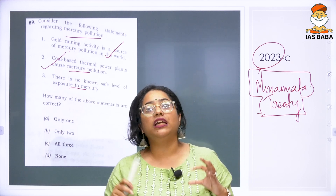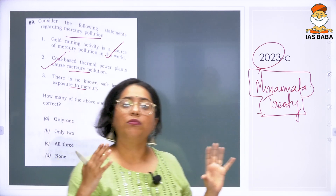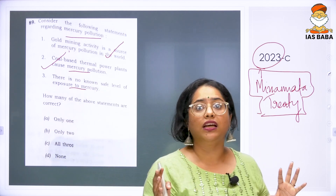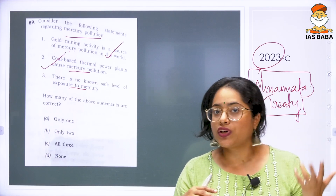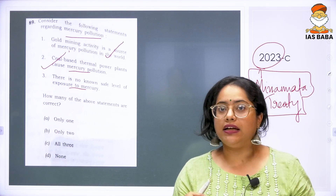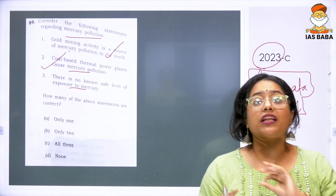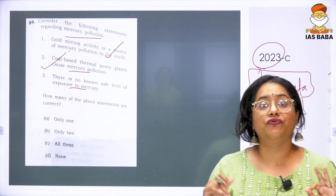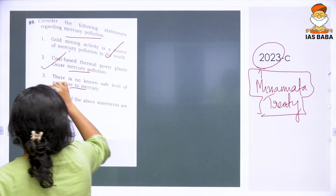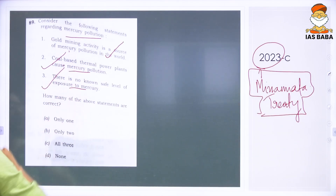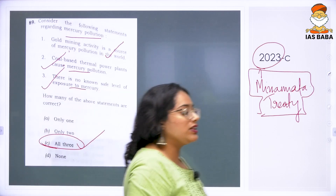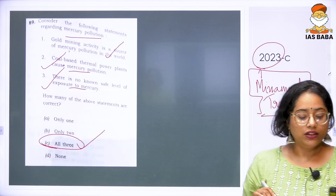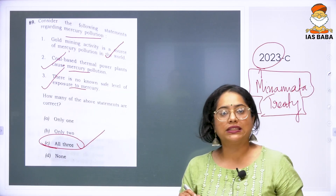Unfortunately, even right now, for several other elements they have fixed safe levels — for lead, silicon, etc. — but for mercury, they have not yet fixed a safe level. So the answer to this question is C: all three statements are correct.